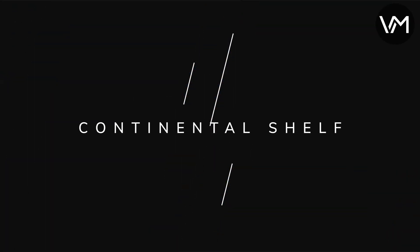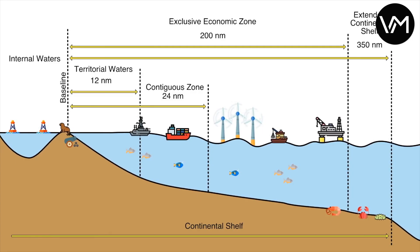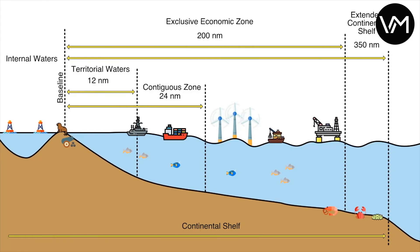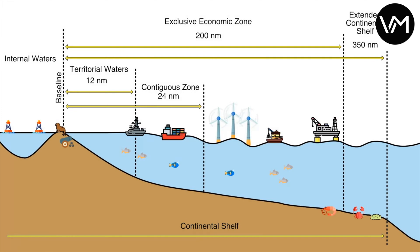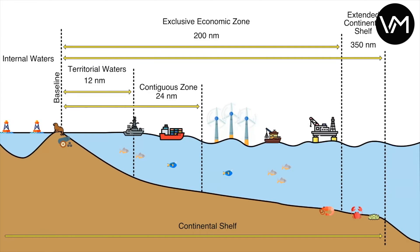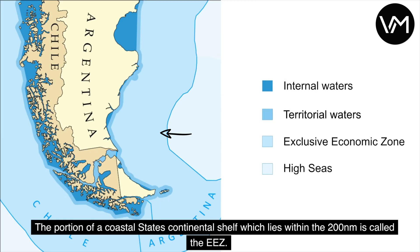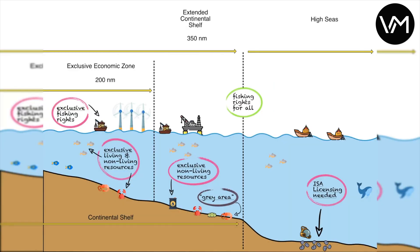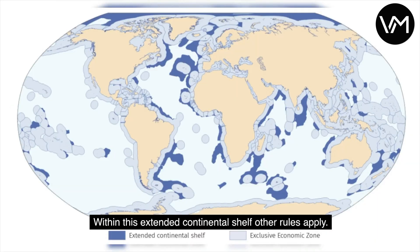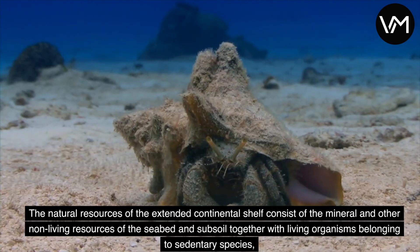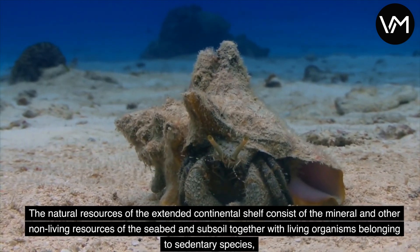Such as gas and oil. The continental shelf of a coastal state is comprised of the seabed and subsoil that extend beyond its territorial sea to a distance of 200 nautical miles, in some cases even up to 350 nautical miles from its baseline. The portion within 200 nautical miles is called the exclusive economic zone, while the portion beyond that 200 nautical mile limit is called the extended continental shelf, where other rules apply.